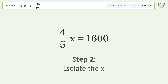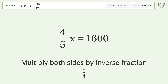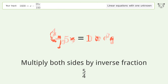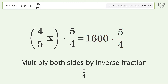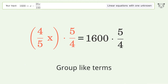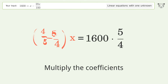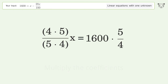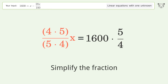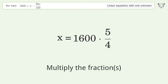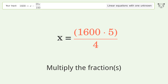Isolate the x: multiply both sides by the inverse fraction 5 over 4. Group like terms. Multiply the coefficients. Simplify the fraction. Multiply the fractions. Simplify the arithmetic.